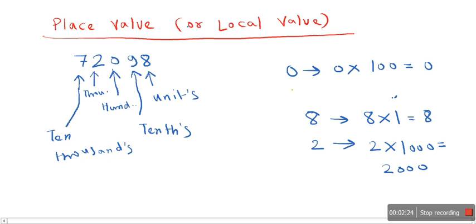So one important observation here is that the place value of 0 will always be 0, as anything multiplied by 0 is 0. So I hope you have understood face value and place value. Thank you for watching this video.